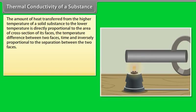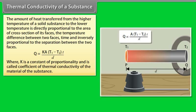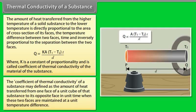Thermal conductivity: The heat transferred through a solid is directly proportional to the cross-sectional area, the temperature difference between the two faces, and time, and inversely proportional to the separation between the faces. This gives Q = KA(T1 − T2)t/D, where K is the coefficient of thermal conductivity. The coefficient of thermal conductivity is defined as the heat transferred through a unit cube from one face to the opposite face per unit time when a unit temperature difference is maintained between those faces.